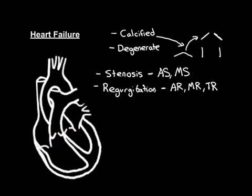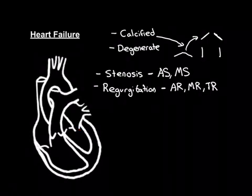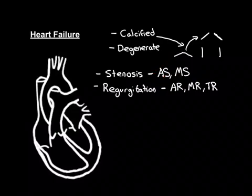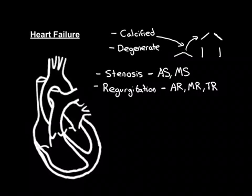The main two valves that become calcified are the aortic valve and the mitral valve. The pulmonary and tricuspid valves don't tend to become calcified. You can actually see this on CT scans — calcium shows up bright white, and it's nearly always the aortic and mitral valves that appear calcified. So calcification can lead to stenosis.